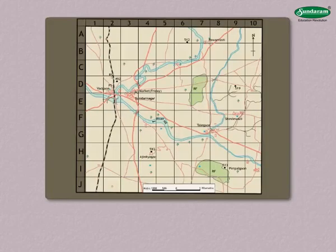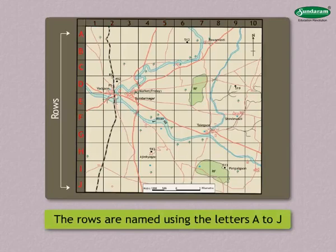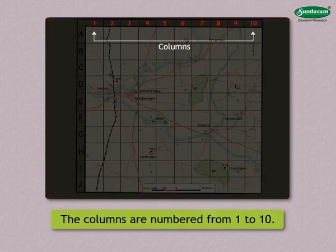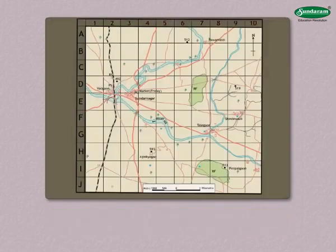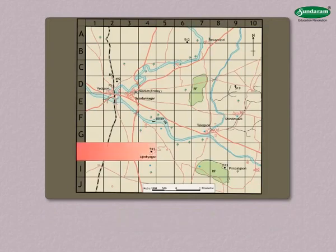In the map, rows and columns can be used to show the location of different things. The rows are named using the letters A to J and the columns are numbered from 1 to 10. A Jinkya Garh Fort is shown in the block H4. In this way, the locations of many things can be identified.